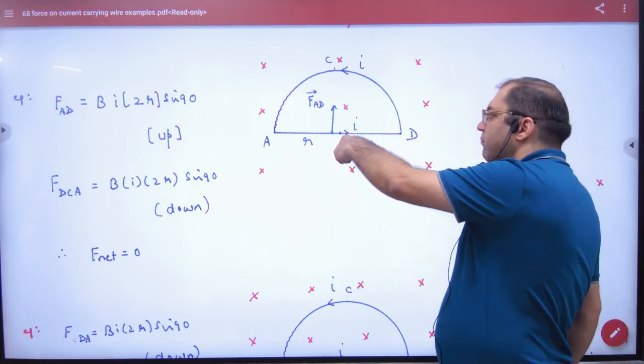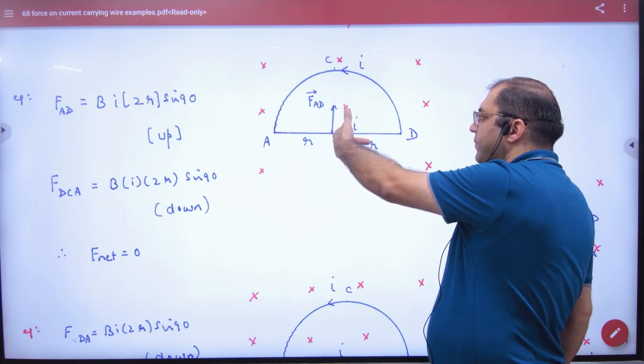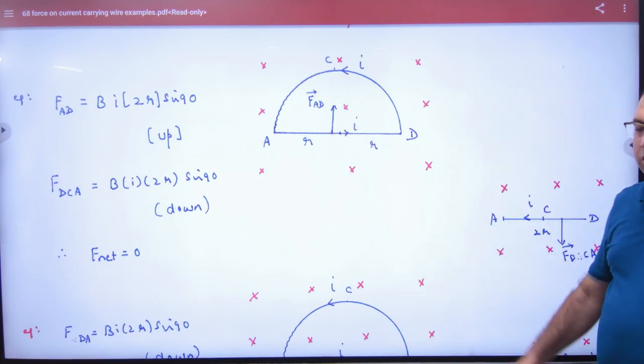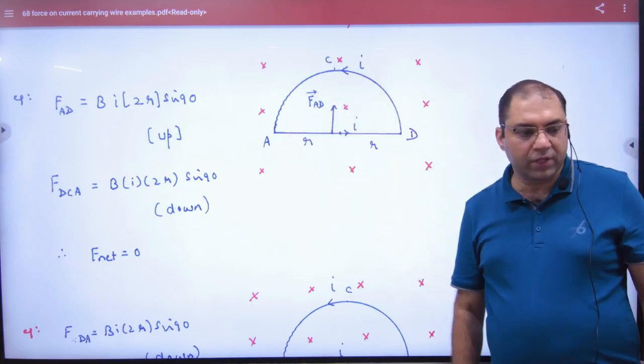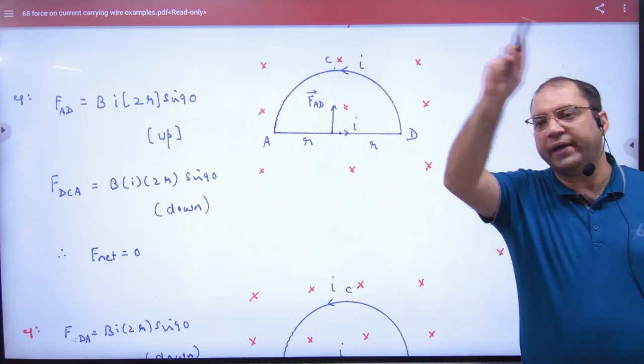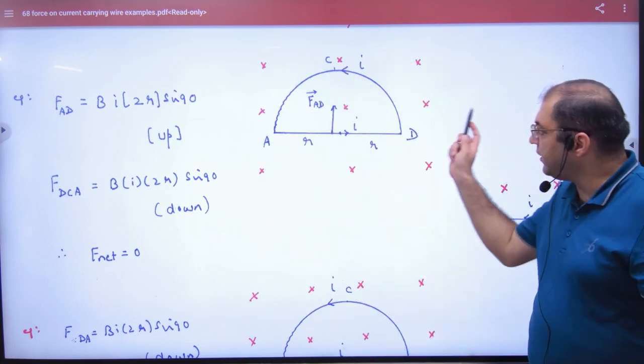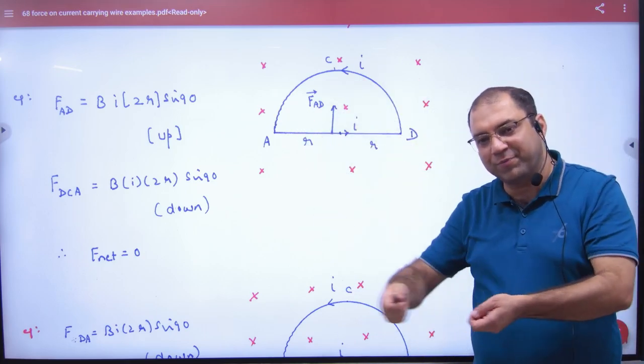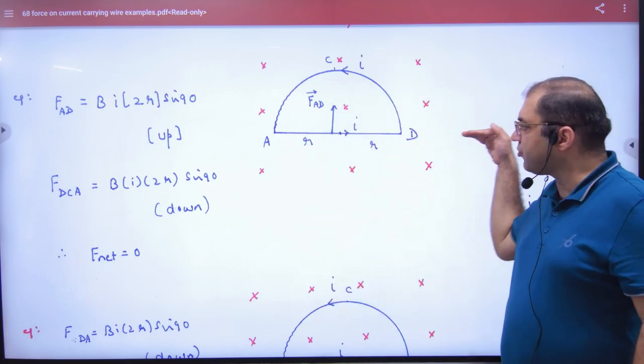And when I ask about DCA, what is the force on it? DCA is a semicircle of radius R. What do we take? Displacement. We take straight DA.